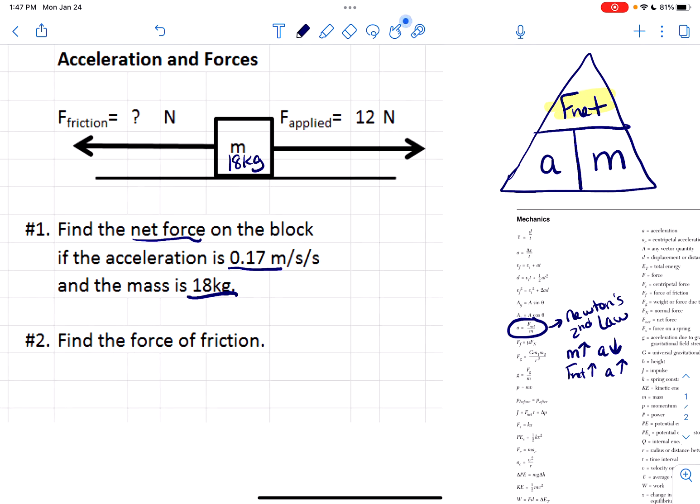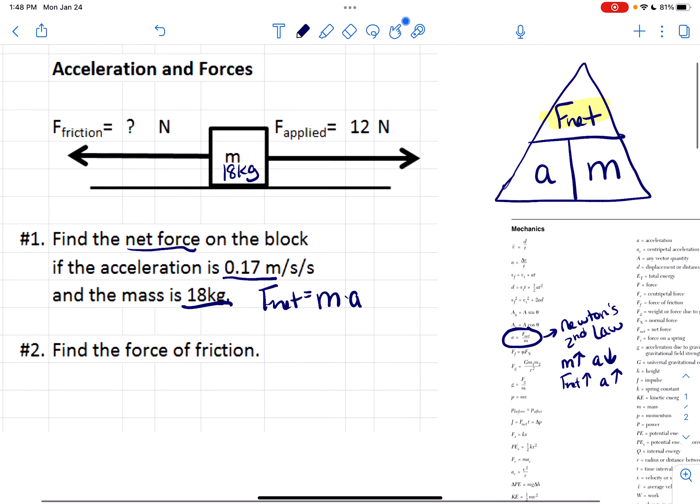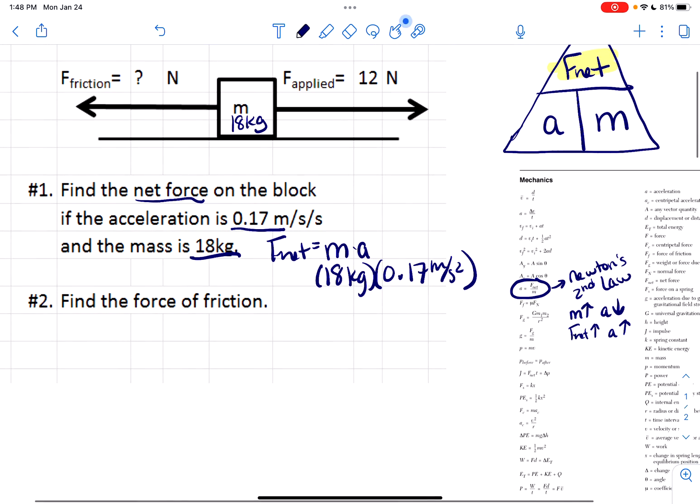I'm just gonna rewrite the equation: M times a, mass times acceleration. We know that my mass is 18 kilograms, we know the acceleration is 0.17 meters per second squared, and that is going to equal, if I round up, 3 Newtons. Newtons you should also know is the same thing as kilograms times meters per second squared. Both are acceptable, I will accept both, but I write Newtons because it's shorter and easier.